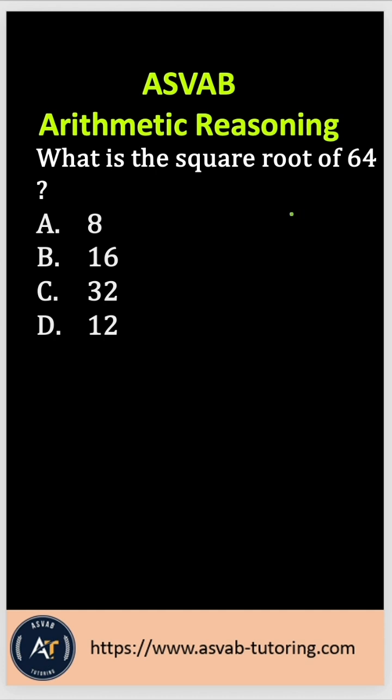calculator, you could do one easy trick: multiply each answer option by itself, and whichever number multiplied by itself gives you 64 is the correct answer. So let's start with option A.